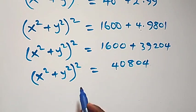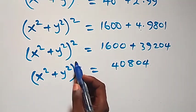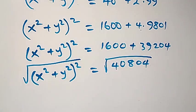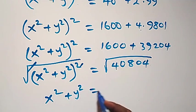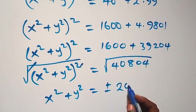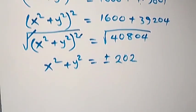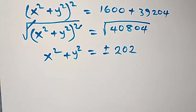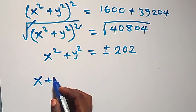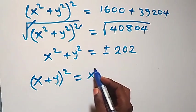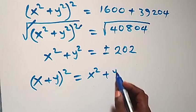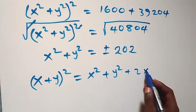We take the square root on both sides to remove the square. The square cancels the square root, giving us x squared plus y squared equals plus or minus 202. Now using the identity: x plus y, all squared, expands to x squared plus y squared plus 2xy.